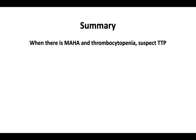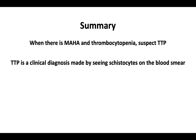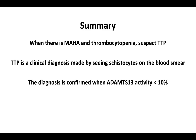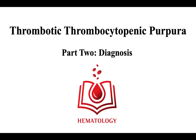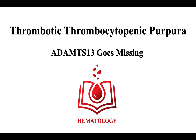In summary, when there is microangiopathic hemolytic anemia and thrombocytopenia, suspect TTP. TTP is a clinical diagnosis made by seeing schistocytes on the peripheral blood smear, and the diagnosis is confirmed when ADAMTS-13 activity is found to be less than 10%. This brings us to the end of Part 2, Diagnosis, and our discussion of thrombotic thrombocytopenic purpura, in which we have investigated the consequences of missing ADAMTS-13 due to its congenital or acquired deficiency.